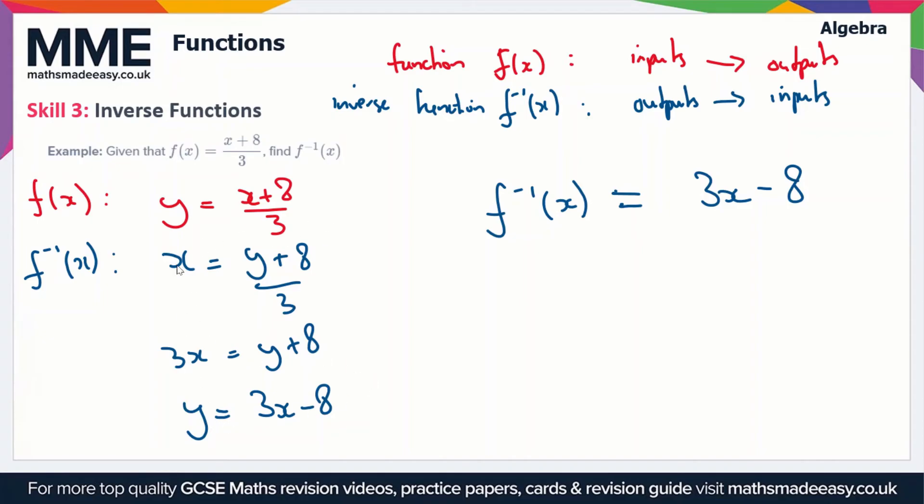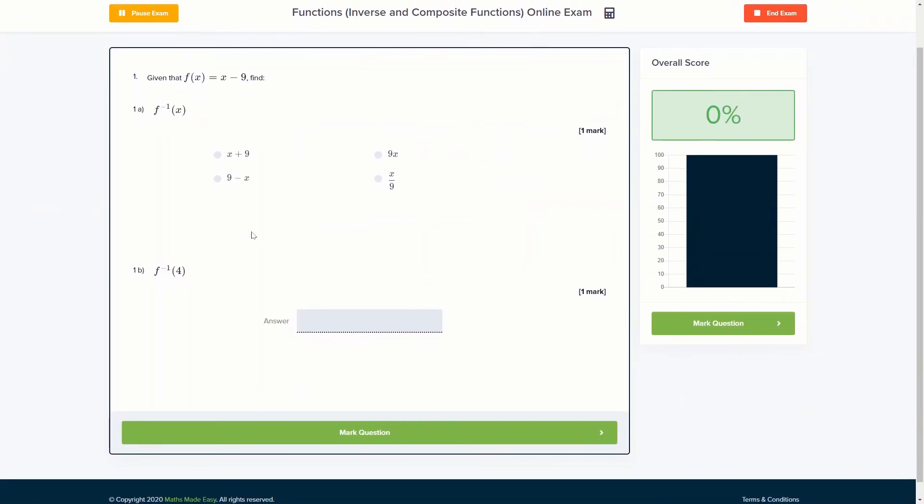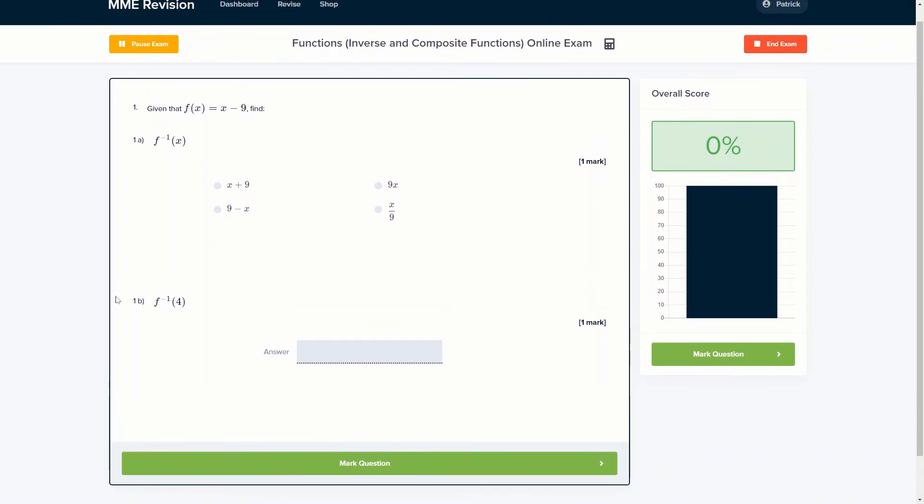If you want to practice some harder functions questions, you can do so with our online exam. This is available through our revision platform, and if you take the test you'll find loads of different questions to have a go at. There's a variety of different question types in there as well, and you'll receive instant feedback on each and every one of them. It's a good way of keeping track of your progress, finding out where you're going wrong and what you need to do in order to improve in time for your actual exam. So if this is something you're interested in, you can click the link below and it will take you straight over there.